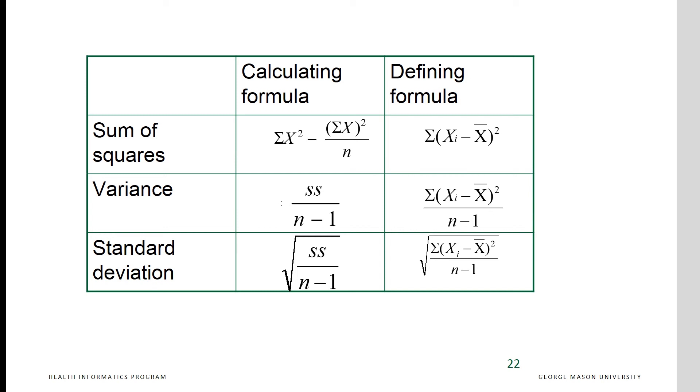Here are the formulas. Some of the easy ways to calculate these numbers is to, instead of calculating the difference for each data point, we could calculate the square of the data point and subtract from it the sum of the data point squared divided by the number of observations. From there on, the sum of squares can be used easily to calculate the remaining formulas.